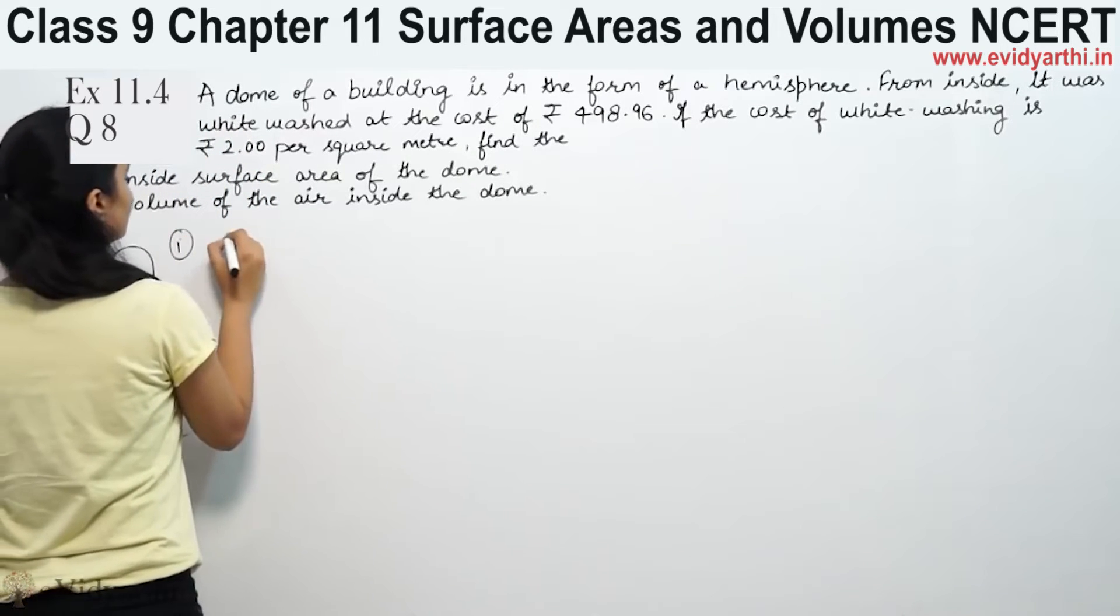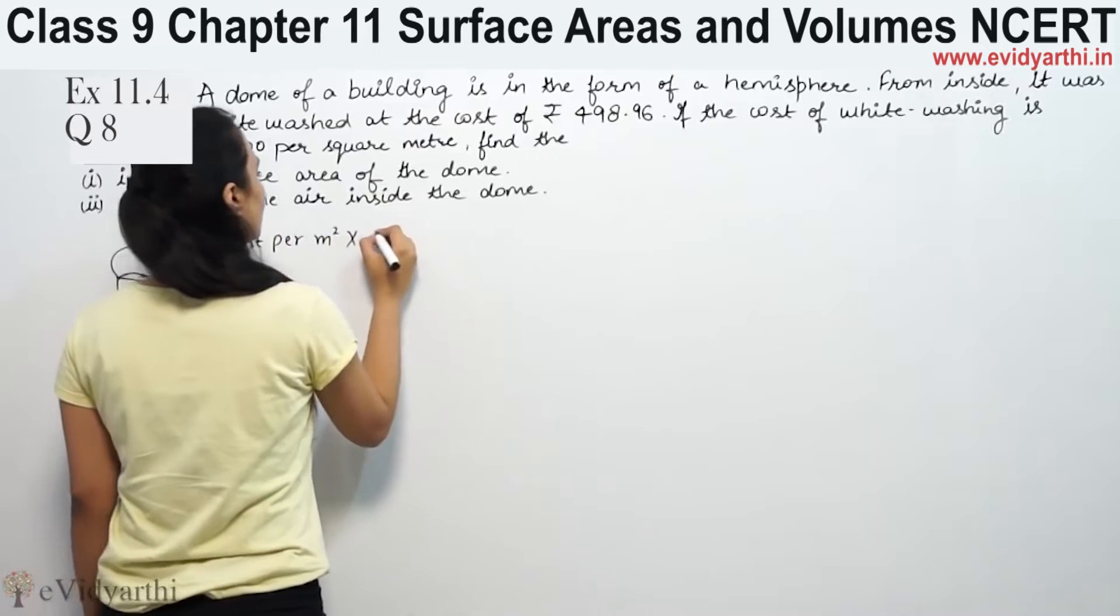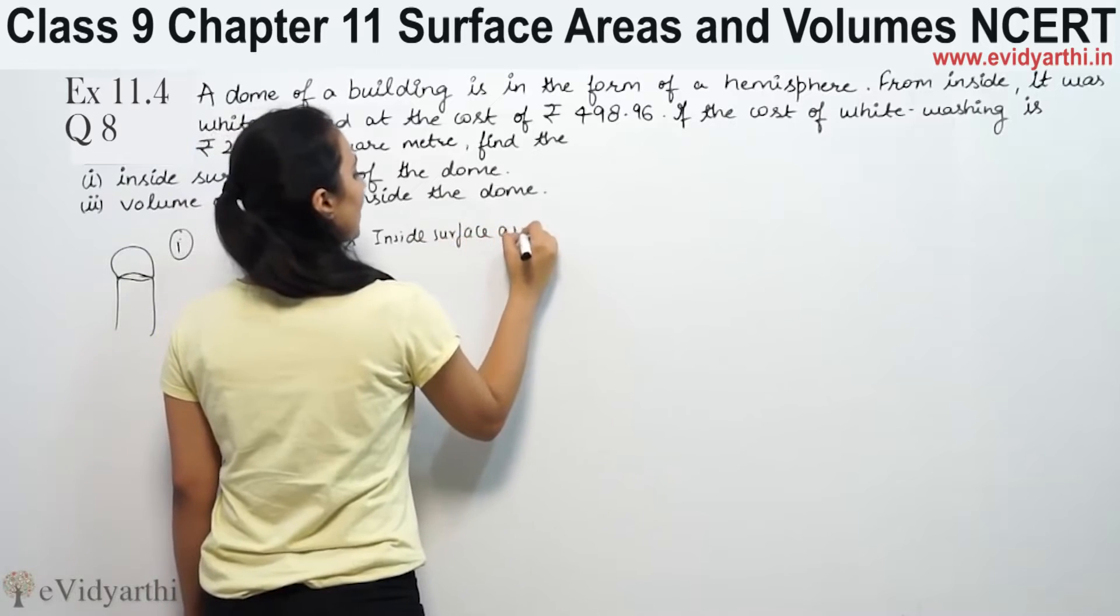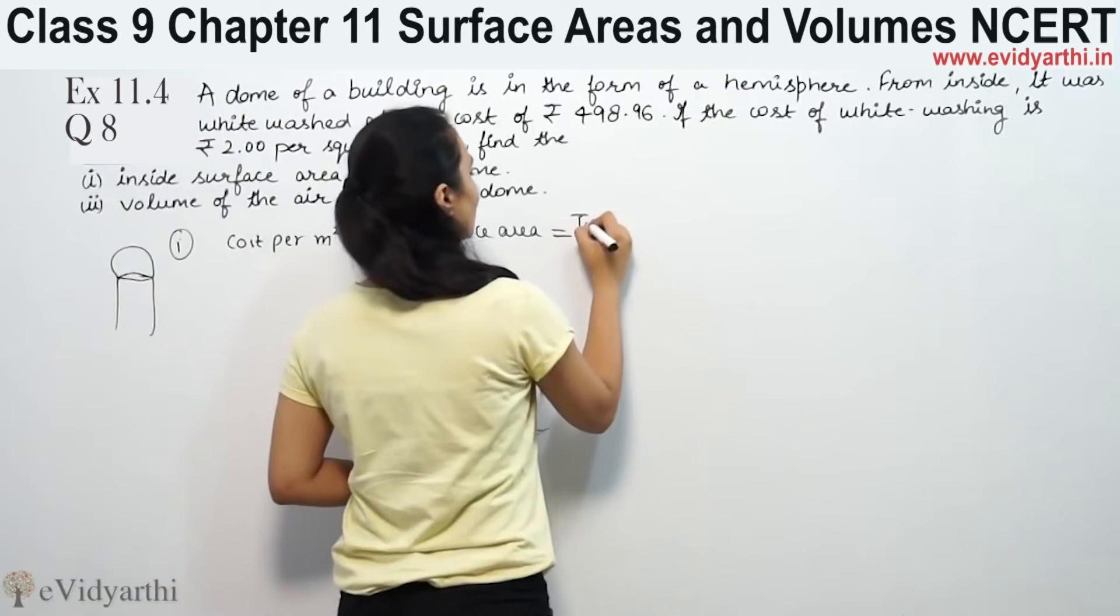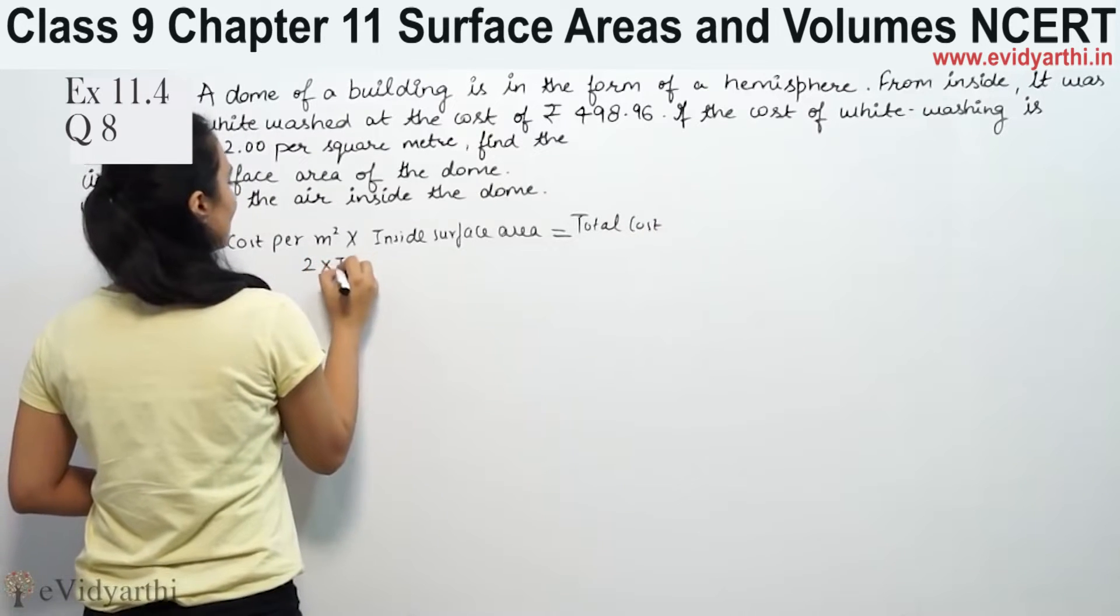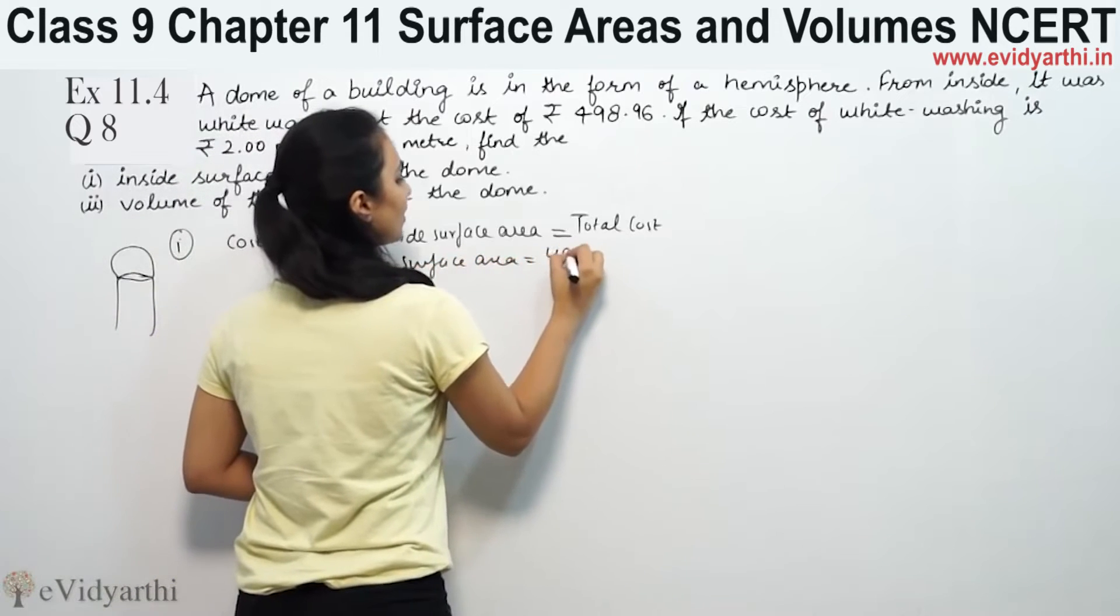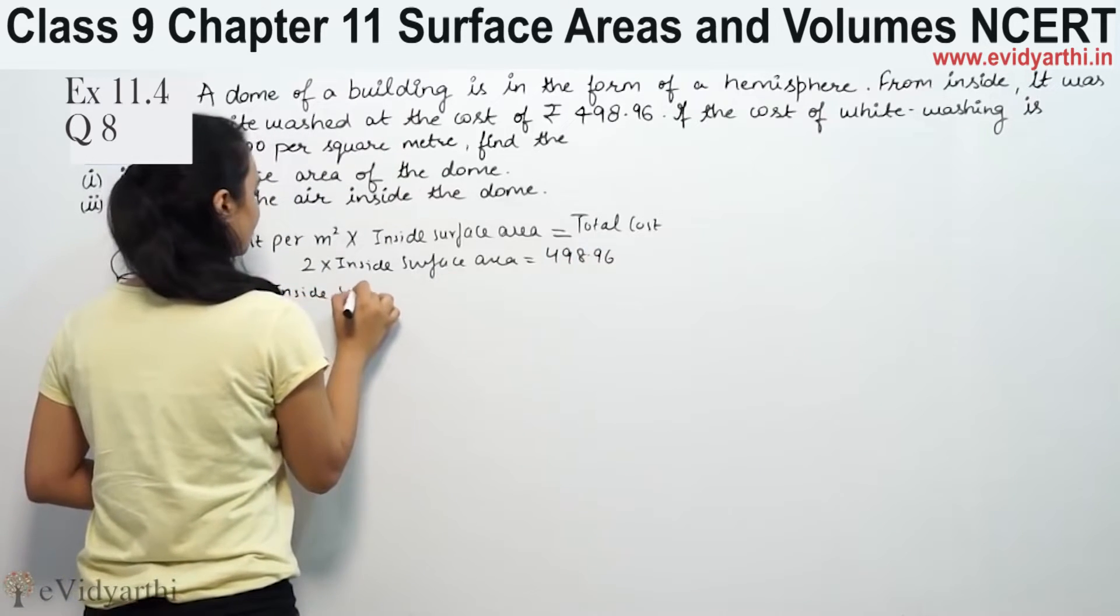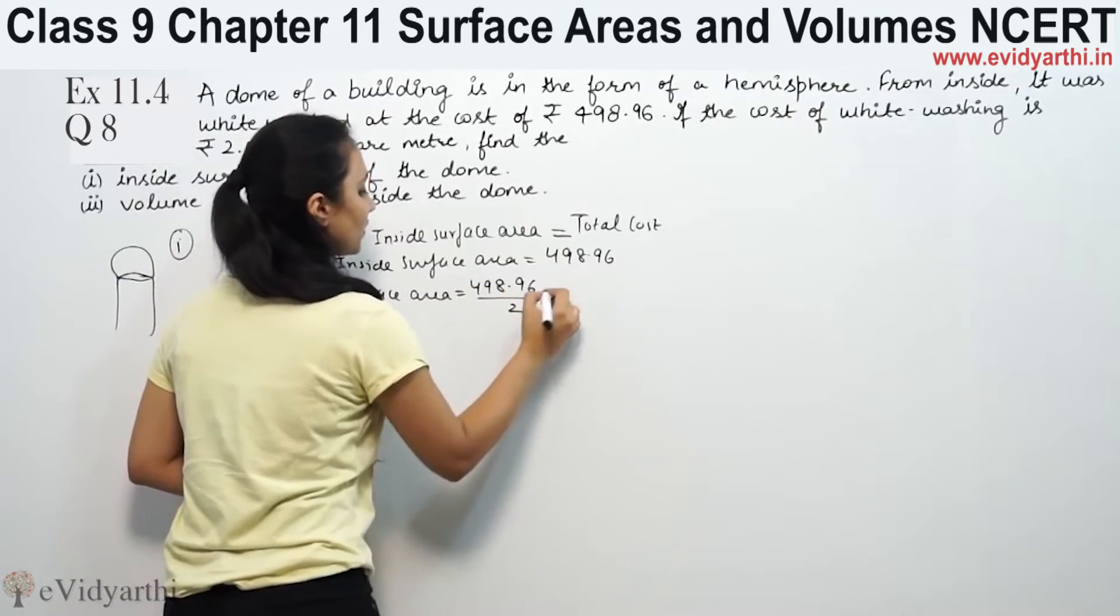So first part, cost per meter square into inside surface area equals total cost. Cost per meter square is Rs 2.